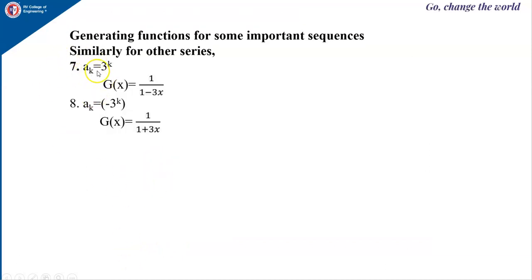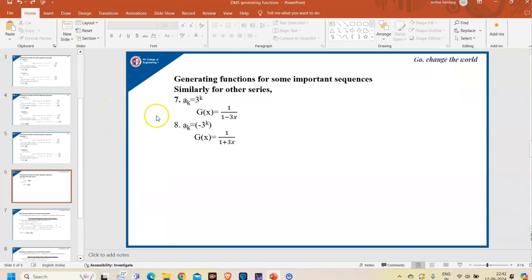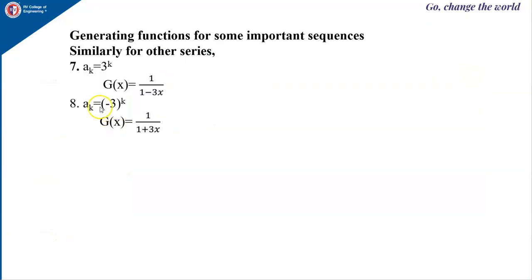Similarly, if a_k = 3^k, then the generating function is 1/(1−3x). If a_k = (−3)^k, then g(x) = 1/(1+3x).